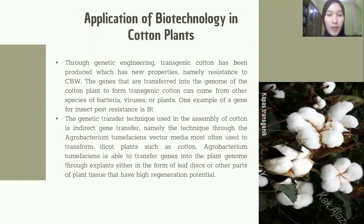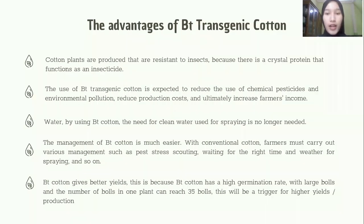Agrobacterium tumefaciens is able to transfer genes into the plant genome, either in the form of a leaf disc or other parts of plant tissue that have high regeneration potential. The advantages of Bt transgenic cotton: cotton plants are produced that are resistant to insects because of the crystal protein that functions as an insecticide. The use of Bt transgenic cotton is expected to reduce the use of chemical pesticides and environmental pollution, reduce production costs, and ultimately increase farmer income.